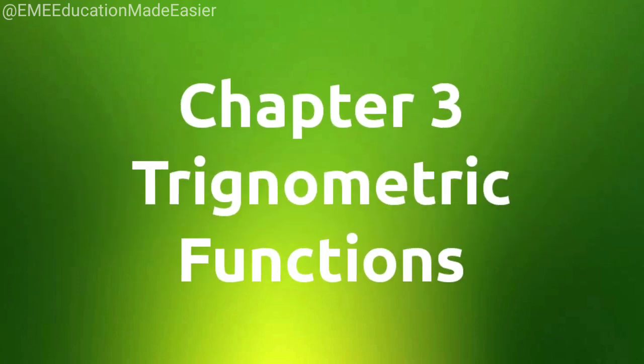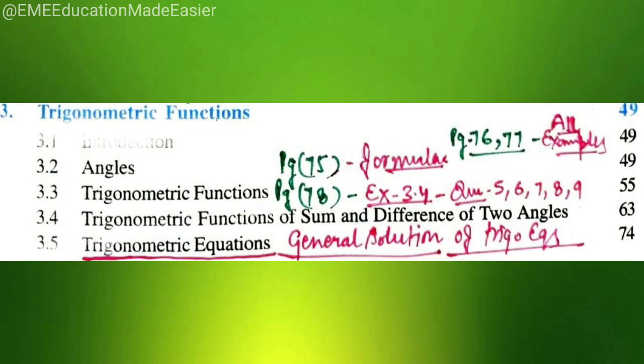From chapter number 3, trigonometric functions, general solutions of trigonometric equations have been deleted. And related to this, we have exercise 3.4 on page number 78, question number 5, 6, 7, 8 and 9 have been deleted. And we have formulas related to this on page number 75, on page number 76 and 77. You need not to do all these examples. So, all have been deleted.